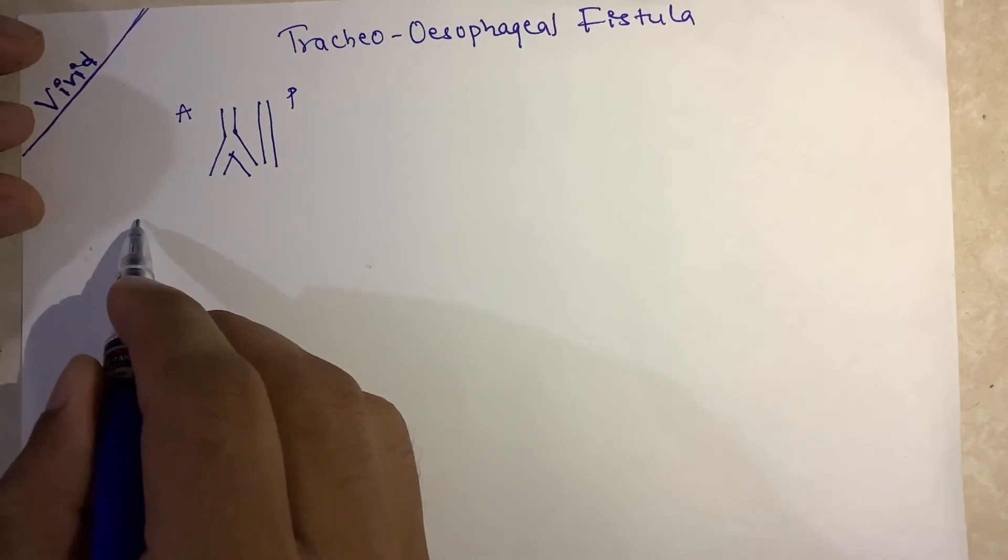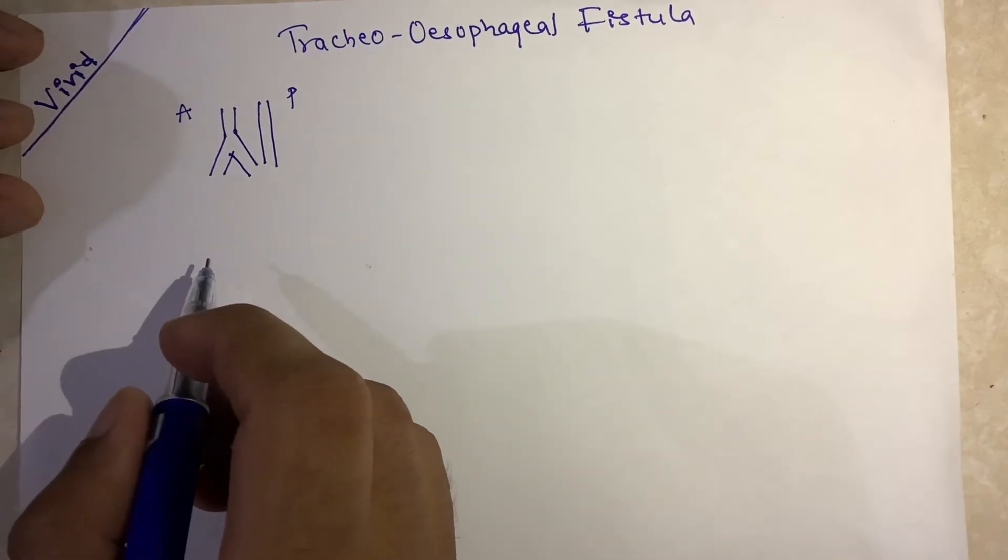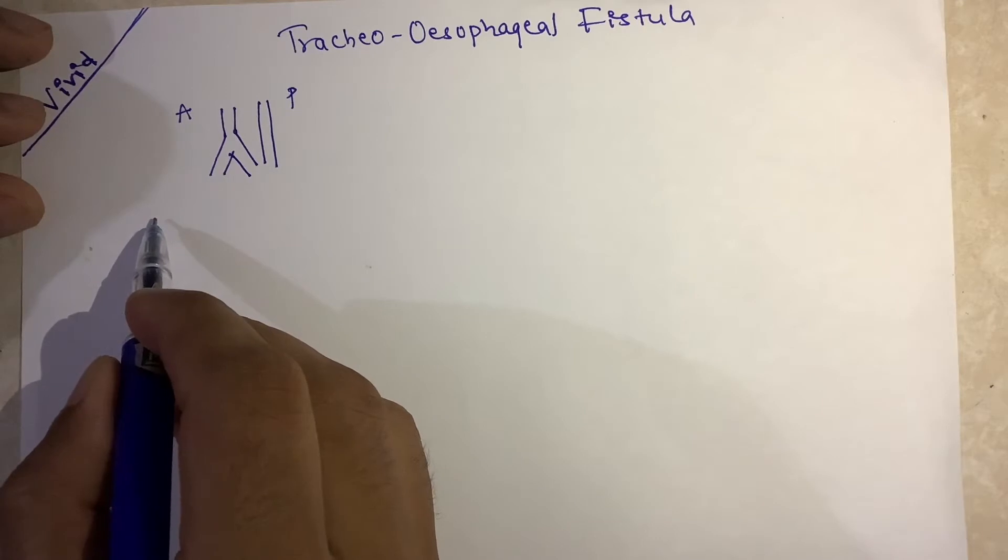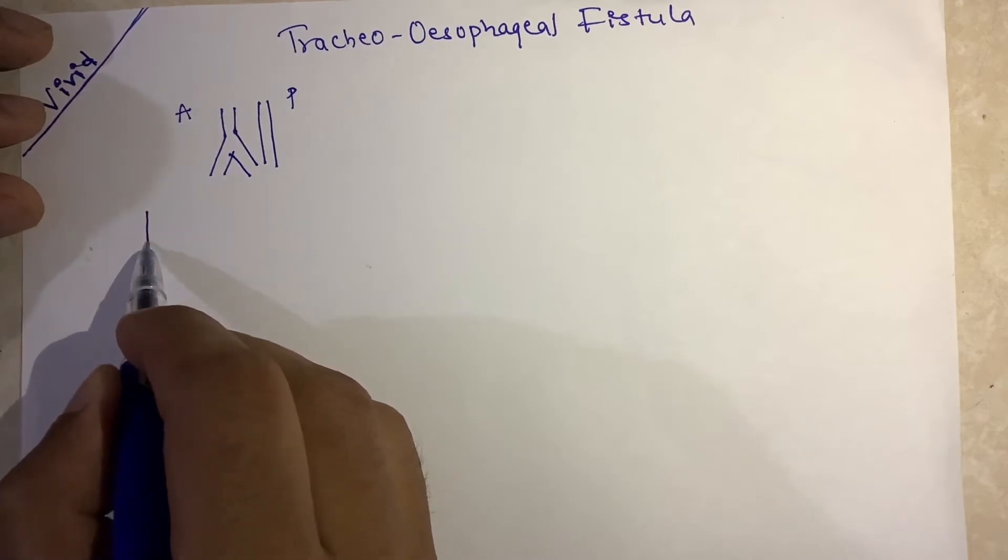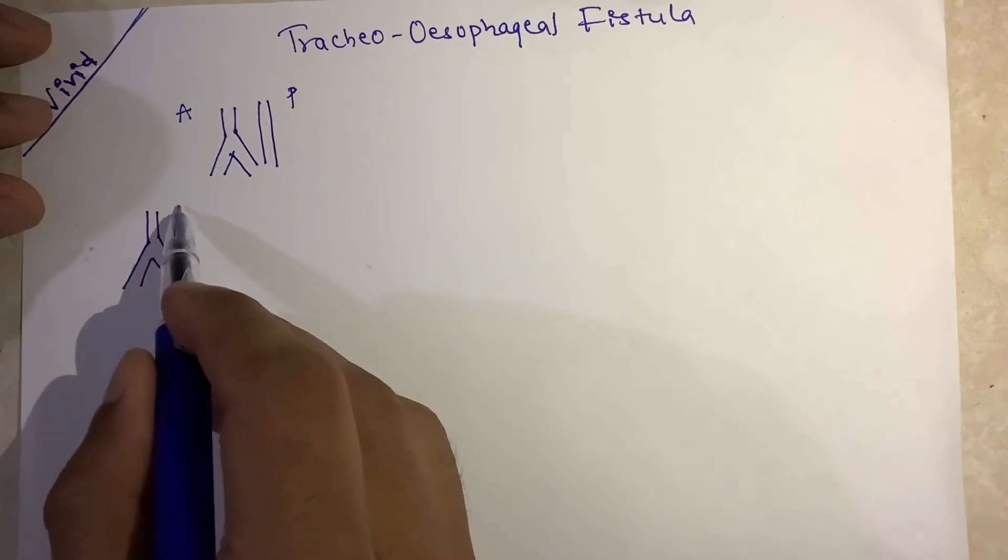In type A, firstly I will make all the five types, and that is type A, B, C, D, and E. Then I will share you the story that I used to remember it. This is the trachea present anteriorly and this is an atretic esophagus.